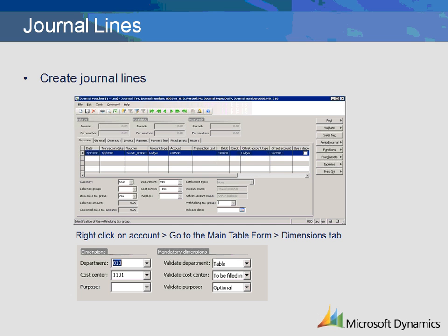The cost center dimension validation rule is to be filled in, which means that it is required. The dimension specified here will default into the transaction and can be changed but not removed. The third dimension, purpose, has a validation rule of optional. No dimension is listed here, so the user can put a dimension into the transaction or leave it blank.